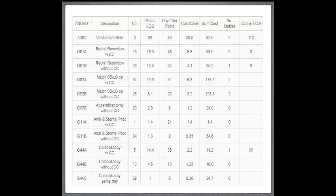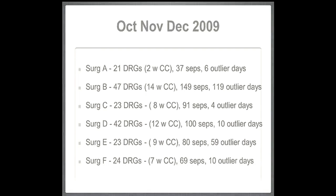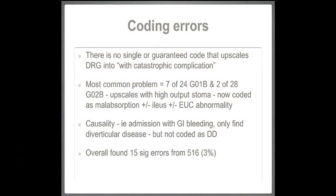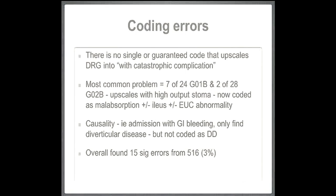When we looked at the six surgeons in our unit by total separations and outlier days — I think this was me — this was my patient with a horrendous number of complications who survived, which I was quite pleased about. That gives a useful overview for a head of department. In terms of coding errors, there was no single guaranteed code that would upscale you into something causing catastrophic complications. Our most common problem was patients with stoma bags — they have a lot of output and spend a lot of time in hospital, but there's actually no code for it. Even if we write down that they've got a high-output stoma, there was nothing the coders could write that would actually upscale this, yet these patients can stay in for an additional week or two.